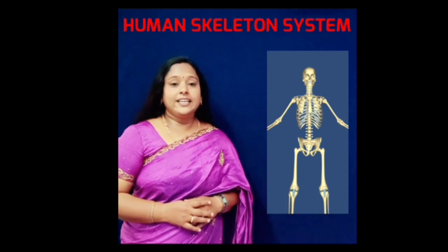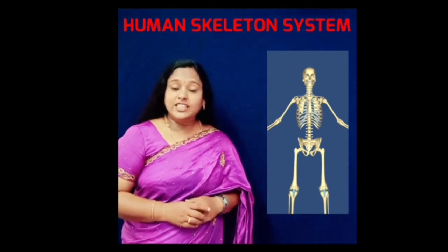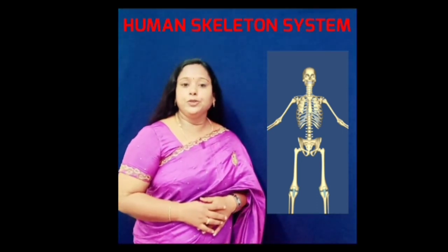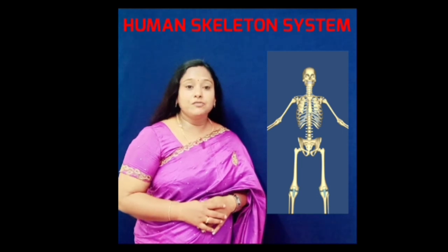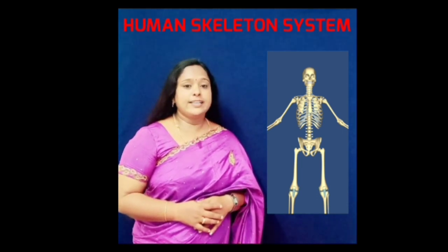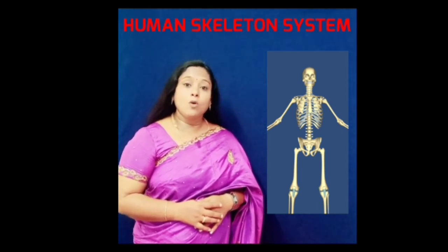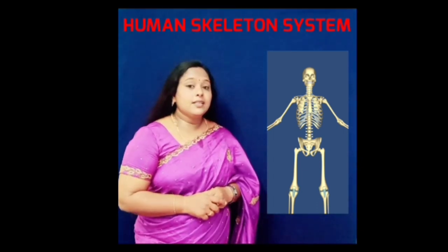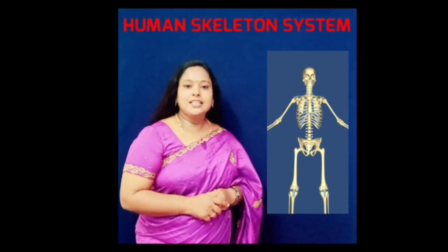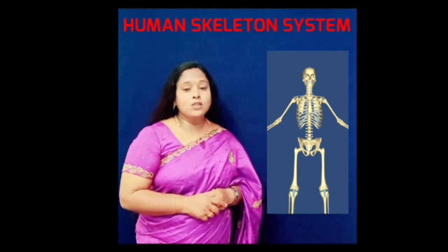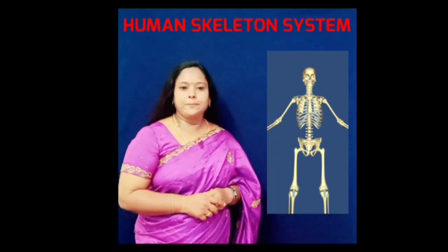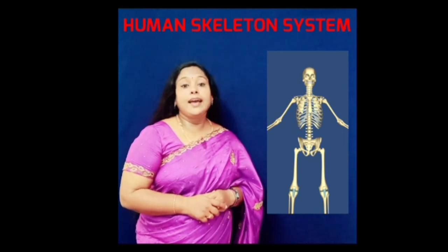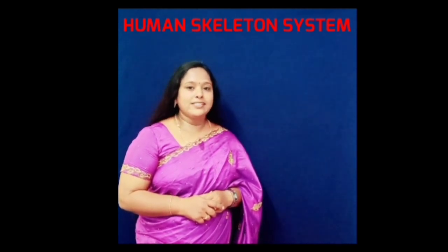There are two main types of skeleton: exoskeleton and endoskeleton. The skeleton present on the human body surface is called exoskeleton and it is formed of non-living substances. It occurs in the form of scales in fishes, epidermal scales and long scales in reptiles, wings, feathers, and claws in birds, and hair and nails in mammals.